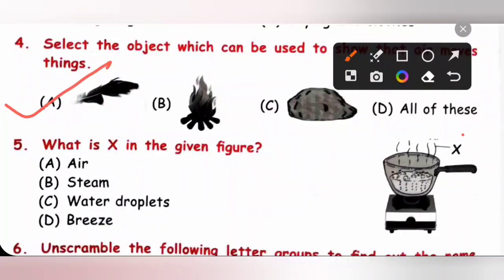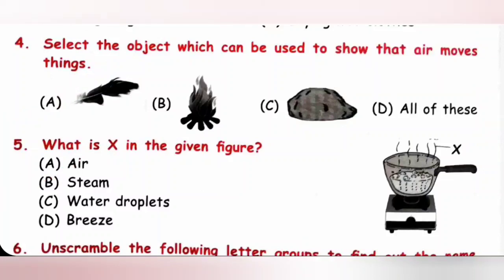Question 5: What is X in the given figure? X represents water vapour or steam. Option B is the correct answer.